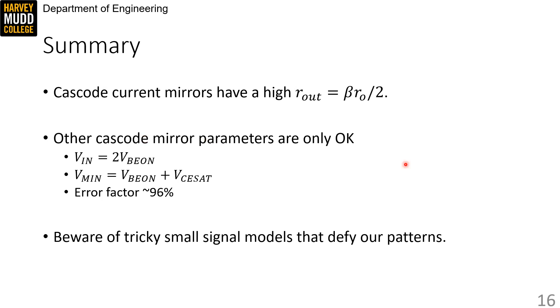So, in summary, cascode current mirrors have a high R out of beta R O over 2. The other cascode mirror parameters are only OK. V in is 2 VBE on, V min is VBE on plus VCE set, and the error factor is about 96%. And finally, small signal analysis can continue to be a thorn on our side. So, keep a sharp eye out for tricky models that defy our patterns and ways to minimize their difficulty.